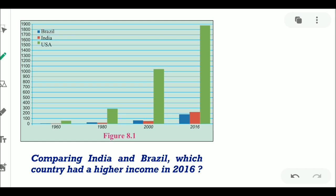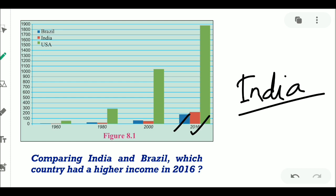You can see the red bar has surpassed the blue bar. So in 2016, India has more national income than Brazil.